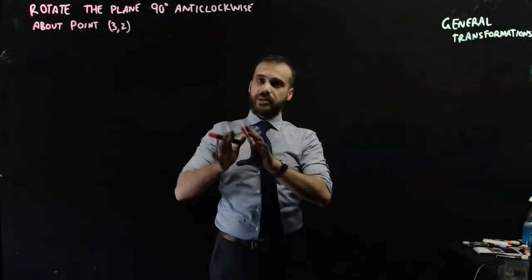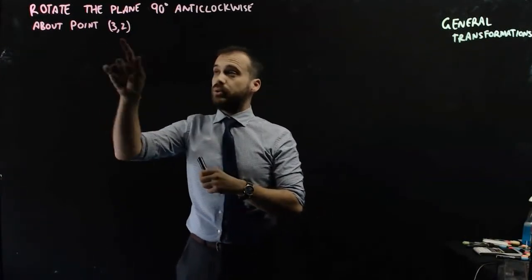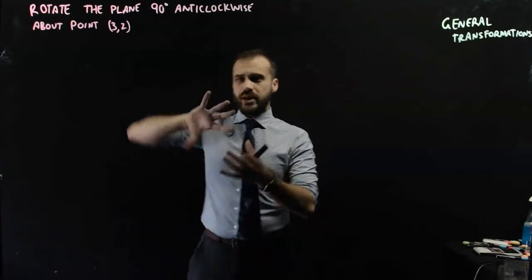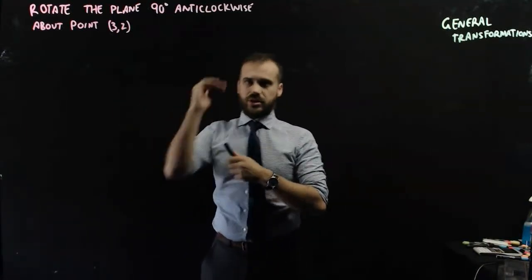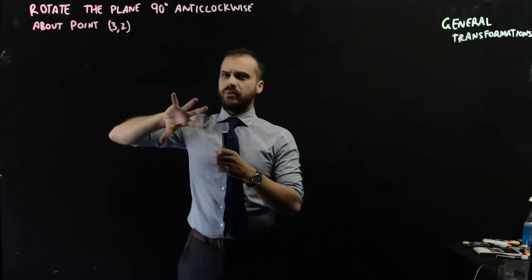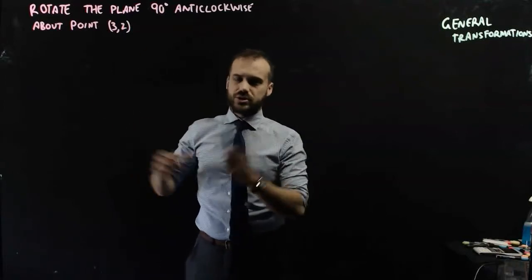So we're going to rotate the plane 90 degrees anticlockwise about the point (3, 2). And we know how to rotate the plane—a matrix cos, sine, negative sine, cos—but that's rotating it about the origin. What about if we want to rotate around this weird point (3, 2)?